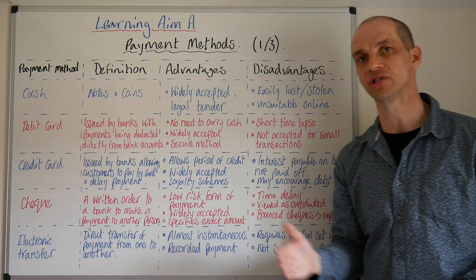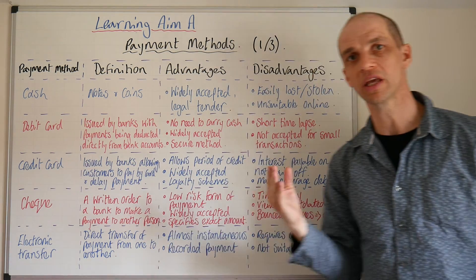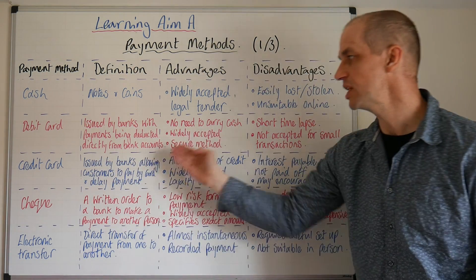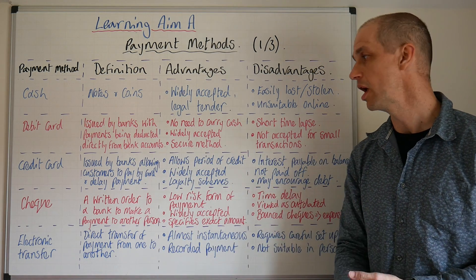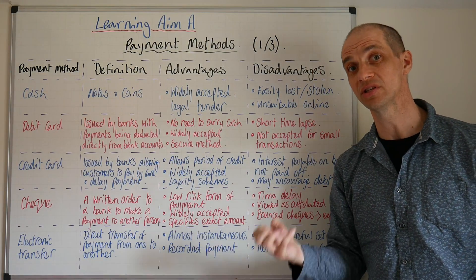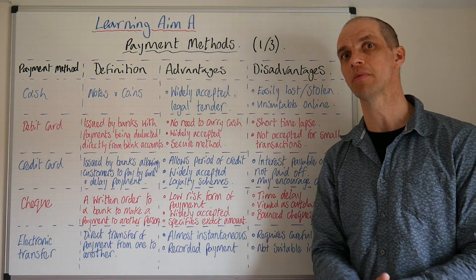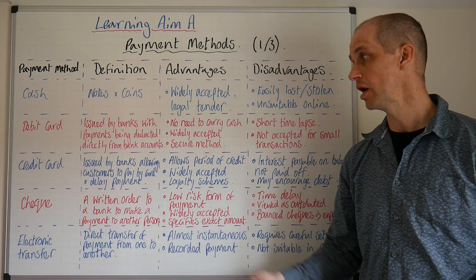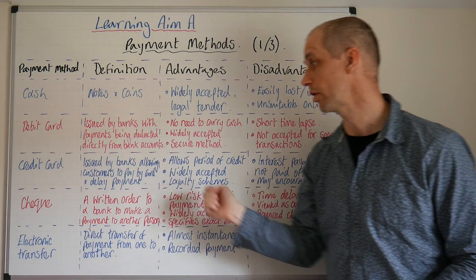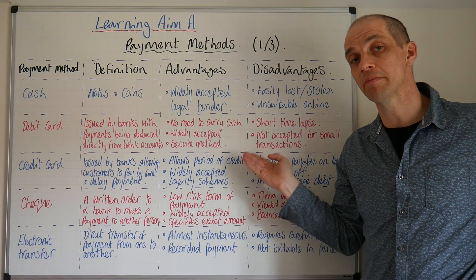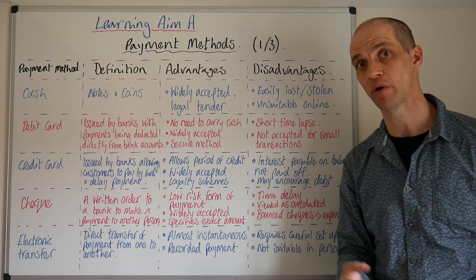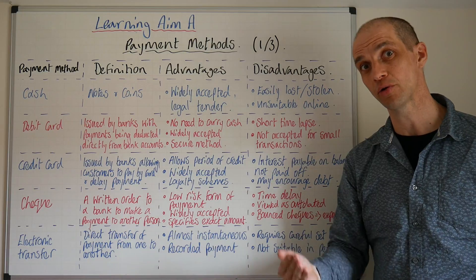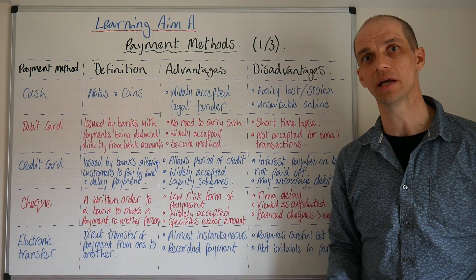Next we have credit cards. Debit cards means the money is taken straight out of your account, but with credit cards you are taking out a period of credit. This is issued by banks allowing customers to pay by card and delay the payment. It usually takes a month or so for the funds to leave your bank account — that happens once per month at the end of the calendar month for the total spending incurred on your credit card. So if you're waiting for payday and know you'll have sufficient funds in a month's time, it's entirely acceptable to use this.